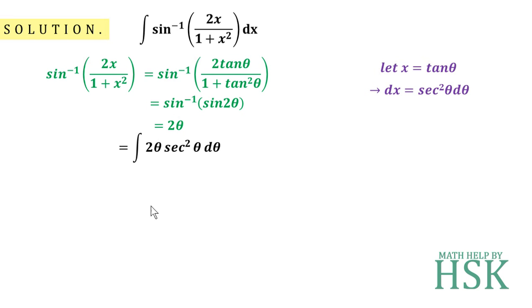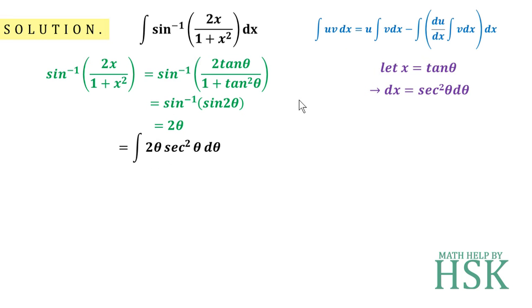So this integral has converted into a very simplified form: ∫ 2θ sec²θ dθ. Now to integrate this function, I'm going to apply the formula of integration by parts, taking 2θ as the first function and sec²θ as the second function.